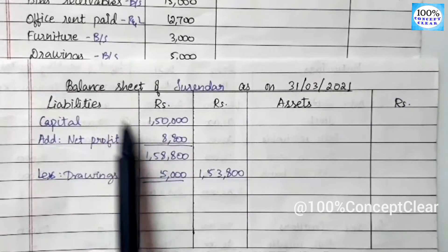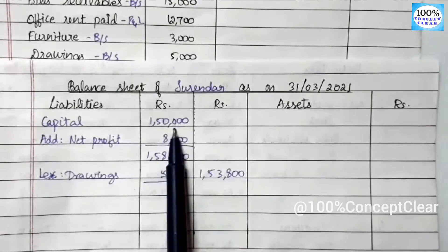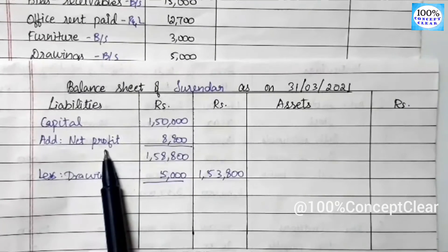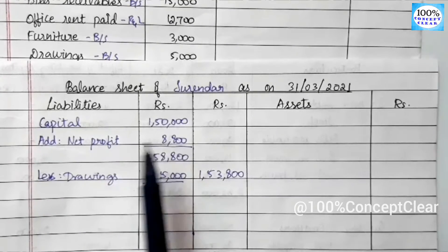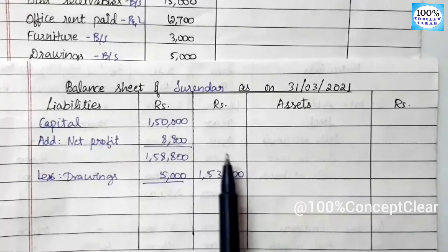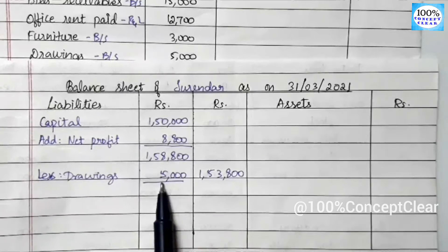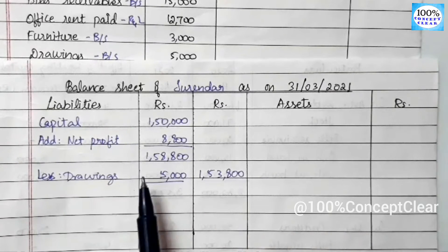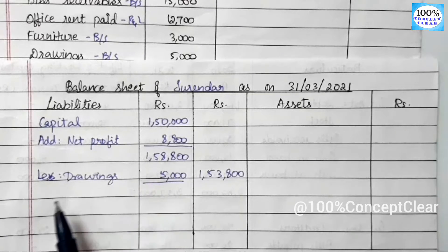Drawings are amounts withdrawn by the proprietor from capital, that is why we minus from capital. For capital calculation: first we have capital, then we add net profit or net loss, then we add interest on capital — we don't have interest on capital here — then drawings are deducted, interest on drawings is deducted — we don't have that here — and income tax value is also deducted. This is the capital format.